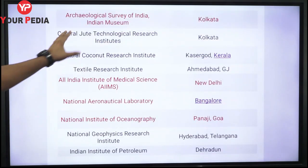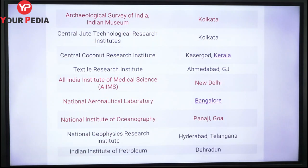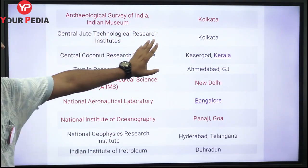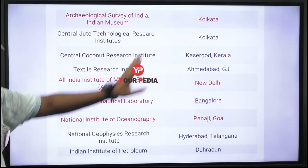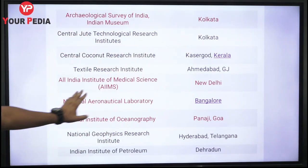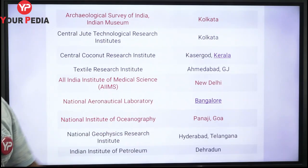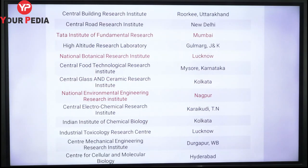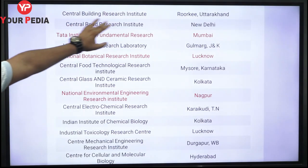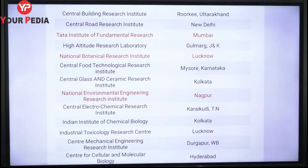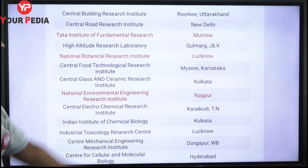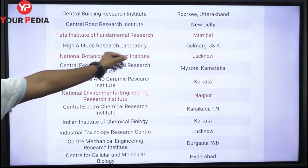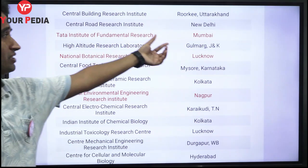Raman Research Center is in Bengaluru, Karnataka. CSIO — Central Scientific Instruments Organization — is in Chandigarh. National Metallurgical Laboratory is in Jamshedpur, Jharkhand. Central Salt and Marine Chemical Research Institute is in Bhavnagar, Gujarat. Archaeological Survey of India is in New Delhi. Indian Museum is in Kolkata. Jute-related research is in Kolkata. Coconut research is in Kerala. Textile research is in Ahmedabad, Gujarat. IARI New Delhi already discussed. NAL — National Aeronautical Laboratory — is in Bengaluru. NIO is in Panaji, Goa. Geophysics-related research is in Hyderabad, Telangana. IIP — Indian Institute of Petroleum — is in Dehradun. Buildings research is in Roorkee, Uttarakhand. Roads research is in New Delhi. TIFR — Tata Institute of Fundamental Research — is in Mumbai. Botanical Research Institute is in Lucknow. High Altitude Research Laboratory is in Gulmarg, J&K.